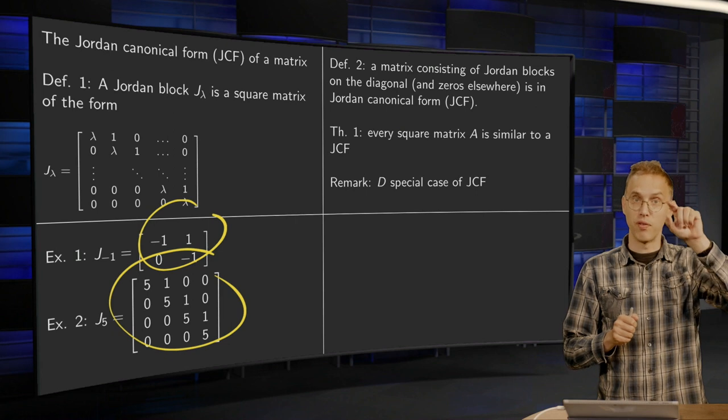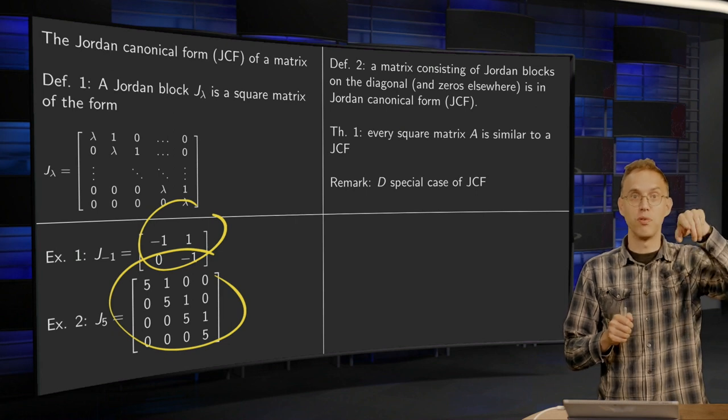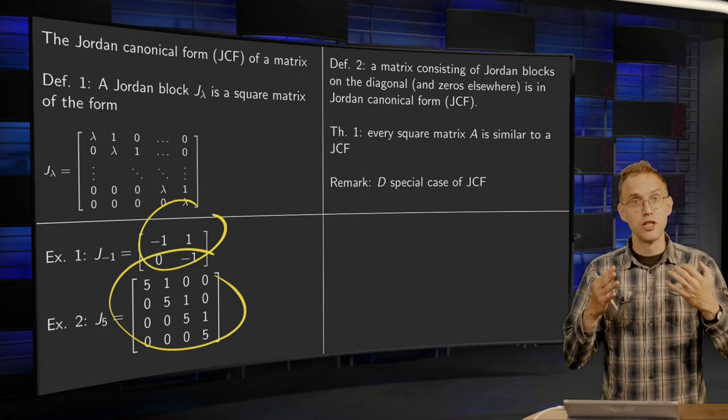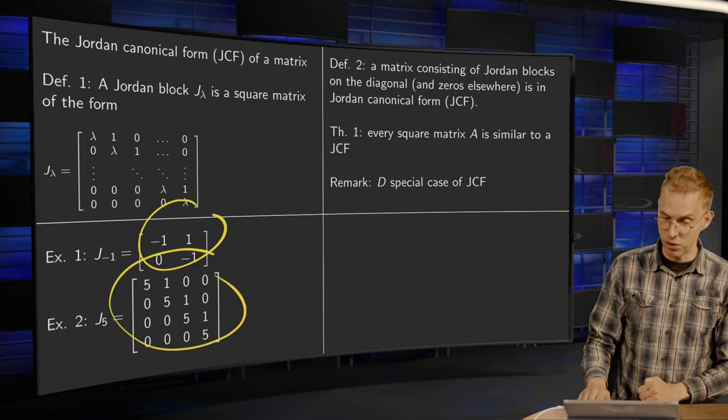So if you have only 1x1 Jordan blocks, there are no ones above. So you have only numbers on the diagonal. So a diagonalization is a special case of the Jordan canonical form.